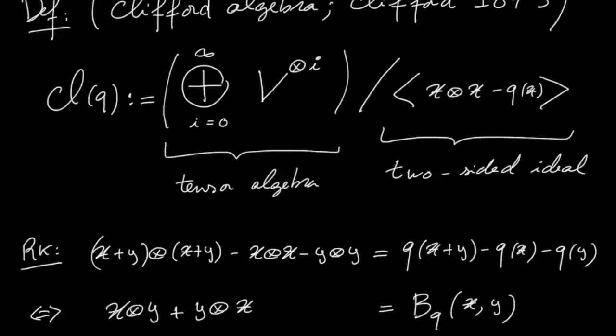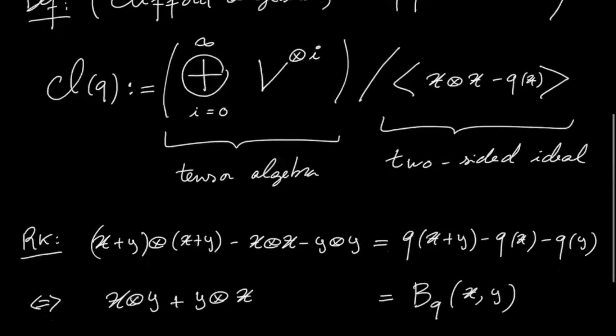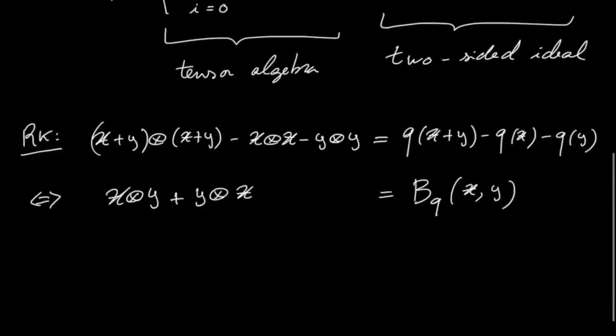In particular, they anticommute if and only if X and Y are orthogonal to each other. So this is what the Clifford algebra is actually doing.